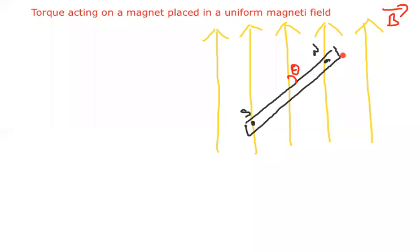What is magnetic moment? Magnetic moment, capital M, can be written as small m into 2L. Magnetic length 2L is the distance between the south pole and north pole.